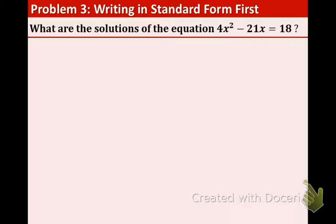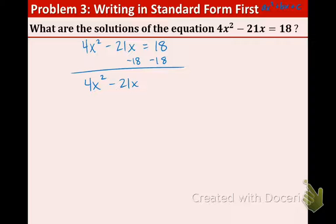Example three. Write in standard form first. Remember, standard form is ax squared plus bx plus c. You can tell that in this given equation it's not in standard form. So that means we want to get everything over to one side of the equation. Here's the original. So I'm going to move this eighteen over. And now, four x squared minus twenty one x minus eighteen equals zero. This is in standard form.